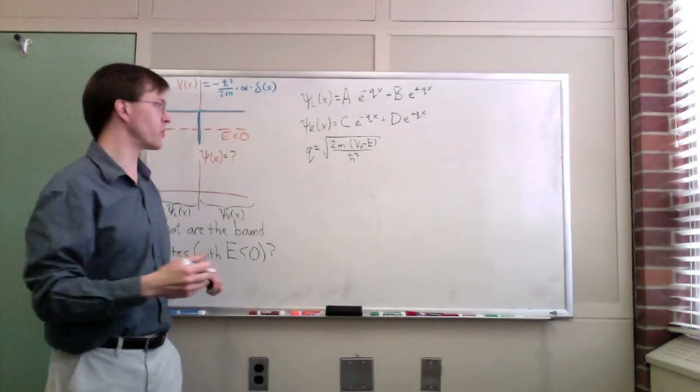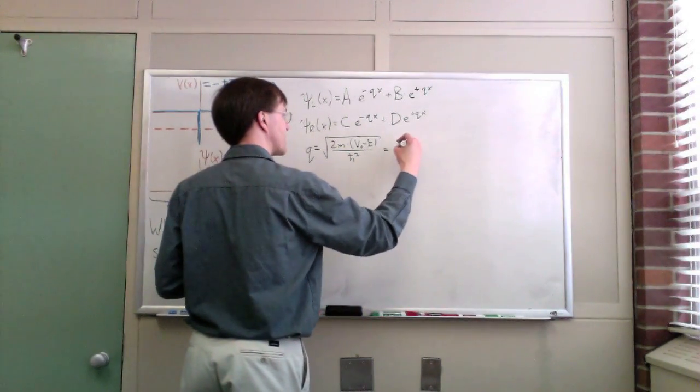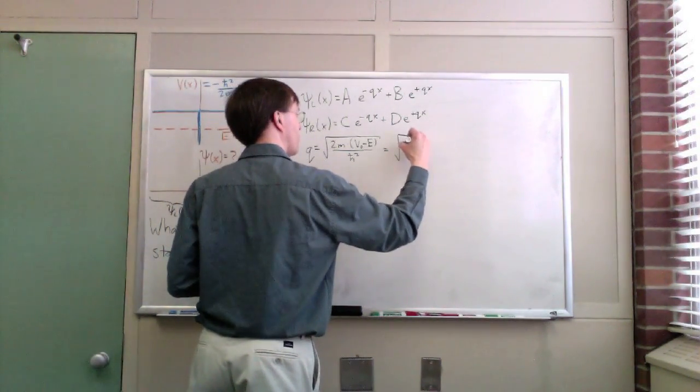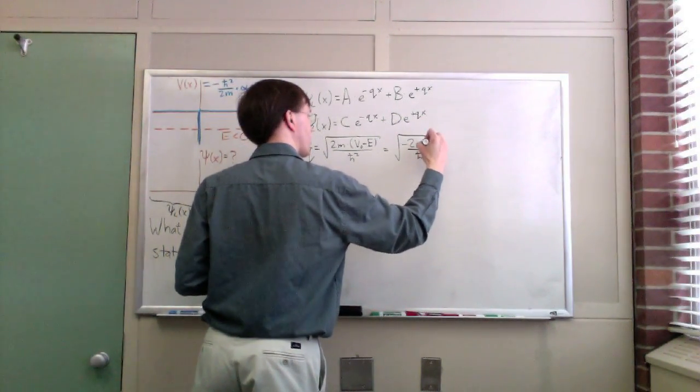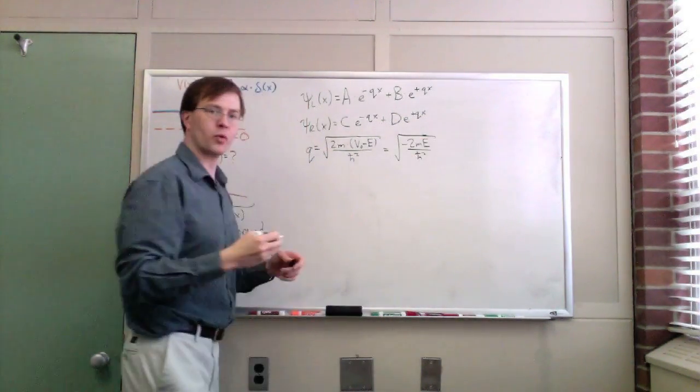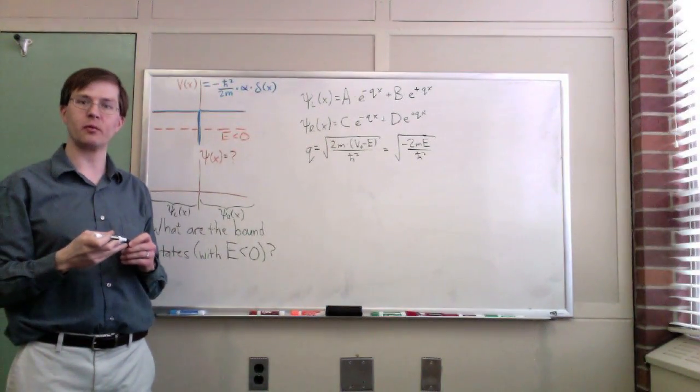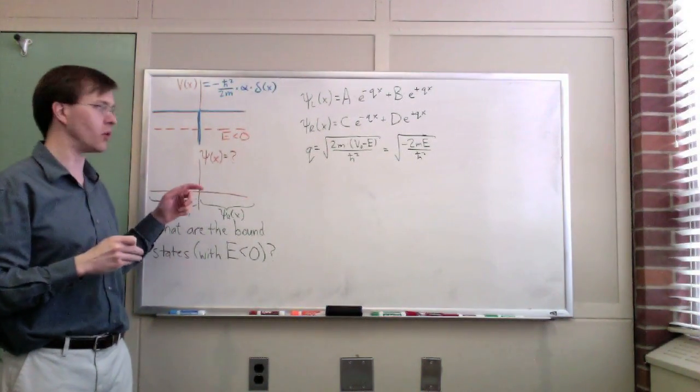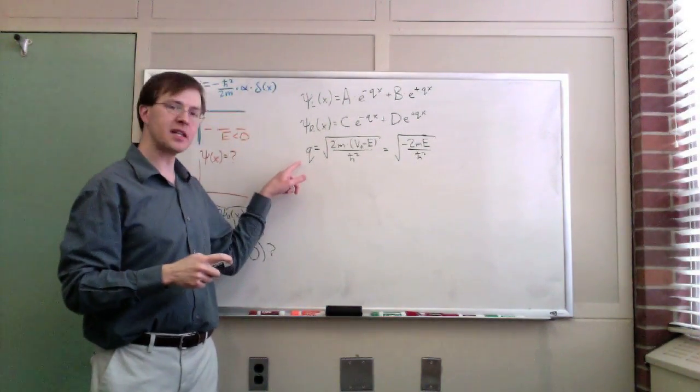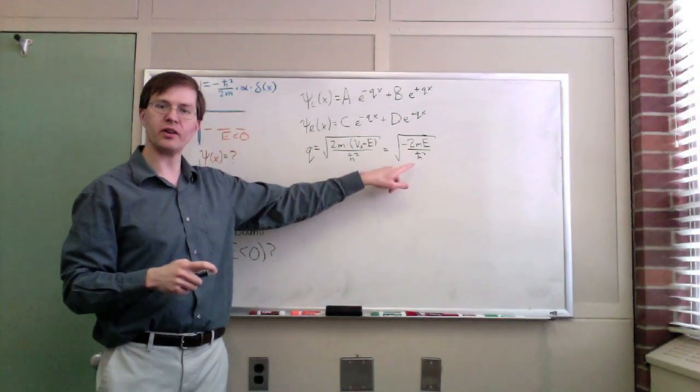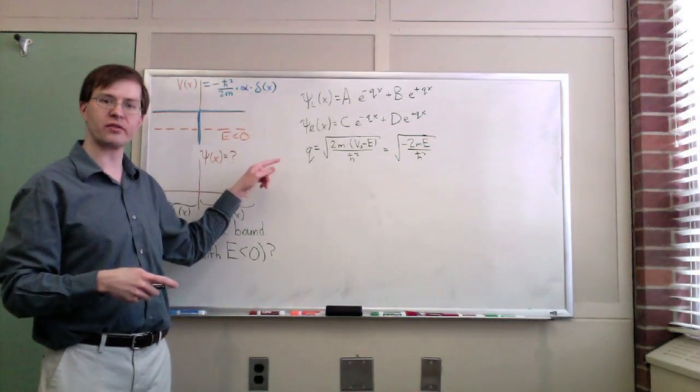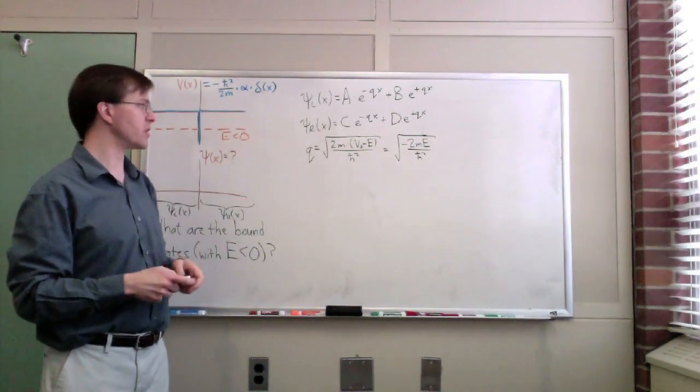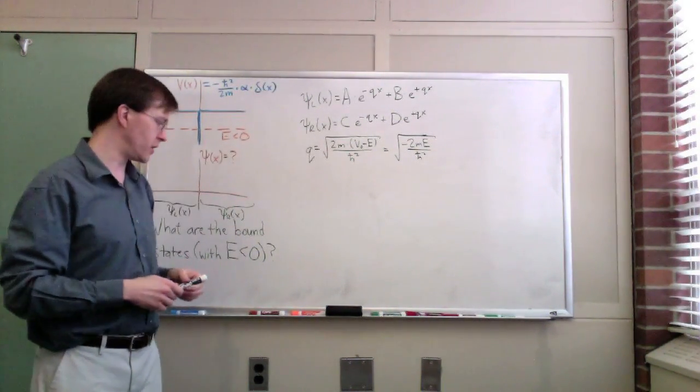But of course, v-naught is zero in each one of these regions, so I can just write this as the square root of minus 2m e over h-bar squared. So the point is, we're looking for the energies that we can have in a bound state of this potential. If we can find q, then we know how to solve and find e. So our goal is going to be to find q, to find what values of q can work for this wave function. So this is our general equation, our general form of the equation.